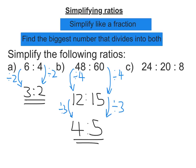And lastly, we can do the same with a ratio that has 3 parts: 24, 20, and 8. You might notice that dividing by 4 would be a good guess. 24 divided by 4 is 6, 20 divided by 4 is 5, and 8 divided by 4 is 2. So that would be 6 to 5 to 2.